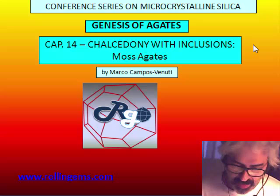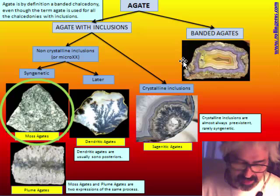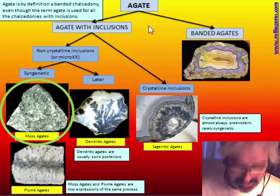We start here to talk about agate, and especially about agate with inclusion. In this chapter we explain about moss agate. First, a classification of agate: the term agate is, by definition, banded chalcedony. So this is the only material that can be strictly defined as agate.